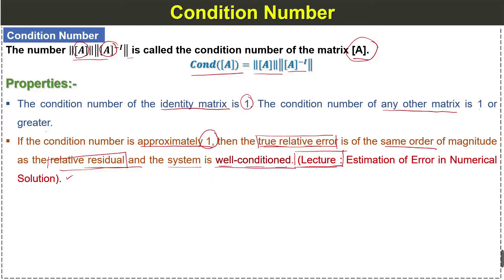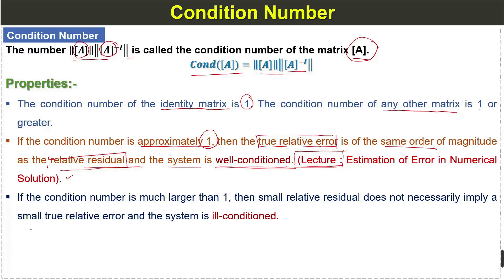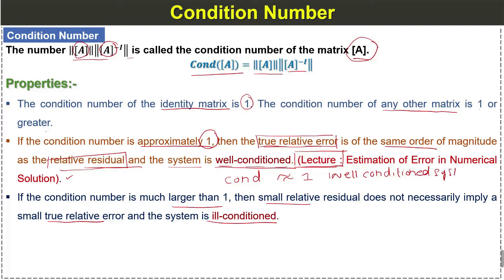Third property: when the condition number is much larger than 1, a relatively small relative residual does not necessarily imply a small relative error, and the system is ill conditioned or poorly conditioned. To summarize: condition number approximately equal to 1 means a well-conditioned system; condition number much greater than 1 means an ill-conditioned or poor-condition system.